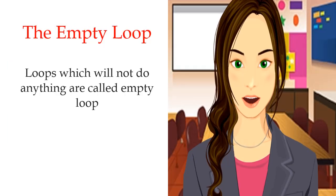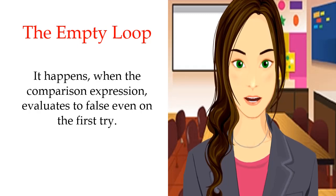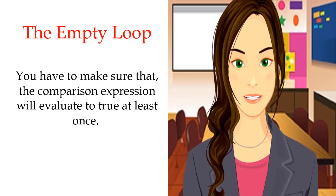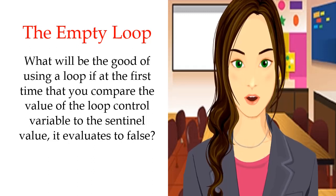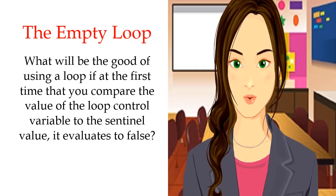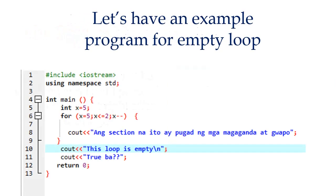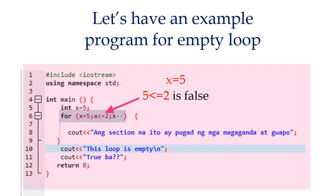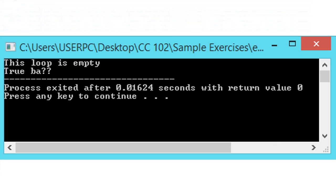The empty loop: there are also loops which will not do anything — it is called the empty loop. This happens when the comparison expression evaluates to false even on the first try. You have to make sure that the comparison expression will evaluate to true at least once. If at the first comparison the loop control variable evaluates to false against the sentinel value, the loop body will not be executed and it will proceed to the statement right after the loop. The sample program will not display the text inside the for loop because the condition is false — only the statements outside the loop will be displayed on screen.